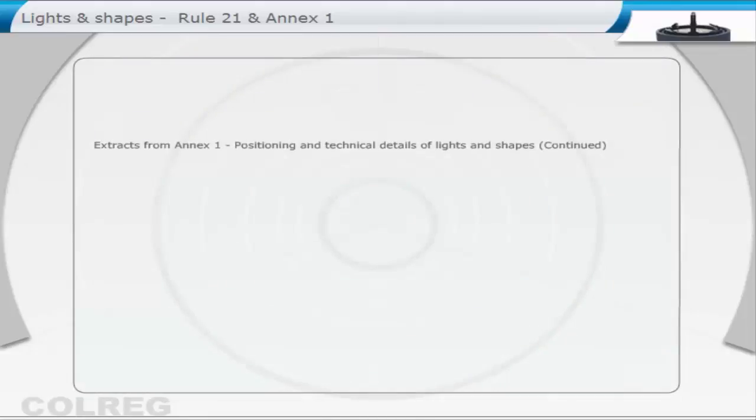Extract from Annex 1: Positioning and technical details of lights and shapes. Shapes. Shapes shall be black and of the following sizes. A ball shall have a diameter of not less than 0.6 metre.